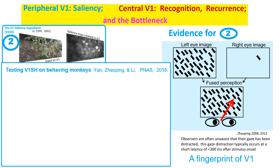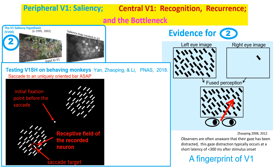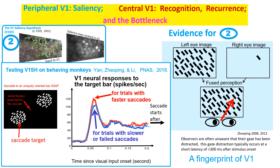Another piece of evidence comes from an experiment in which a monkey tries to find a uniquely tilted bar and saccade to it as quickly as possible. We record from V1 neurons responding to the target bar and plot neural responses versus time since the bars appeared, before the monkey makes the saccade. The difference between faster-saccade trials and slower or incorrect saccade trials should be associated with the saliency difference in behavior. This difference is significant at a very short latency of 40 to 60 milliseconds — too short for the saliency signal to arise from feedback from any downstream visual regions.